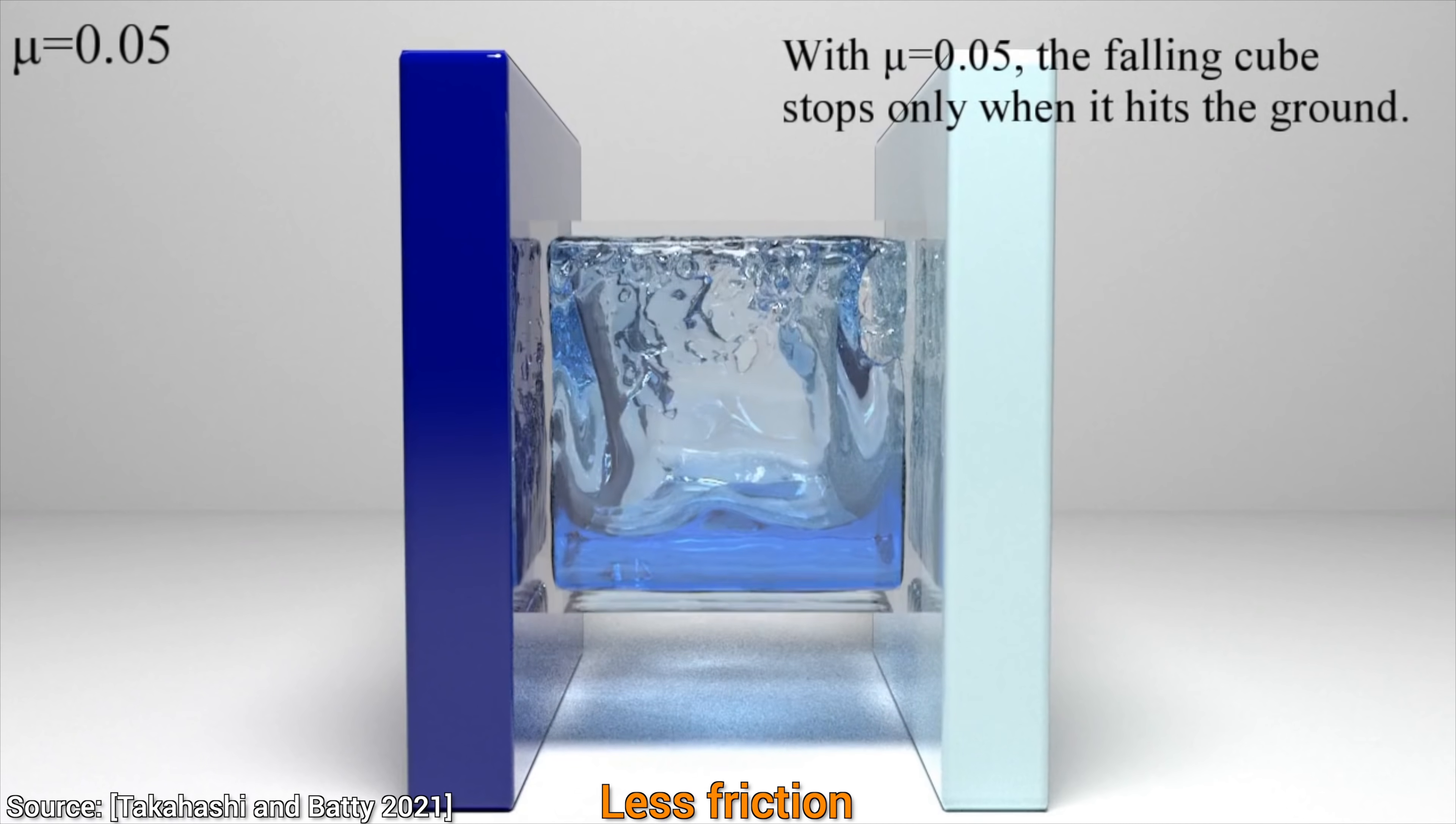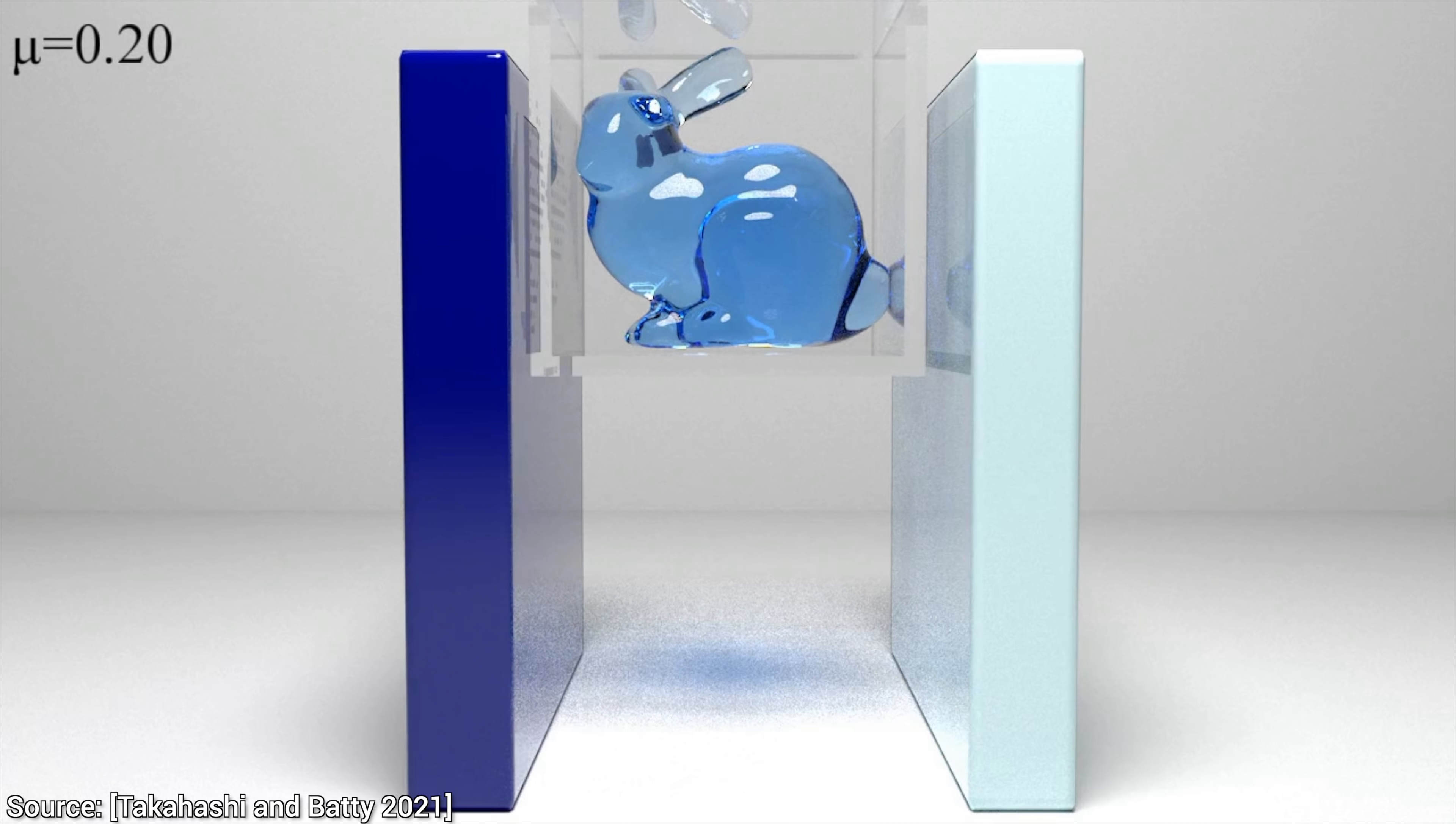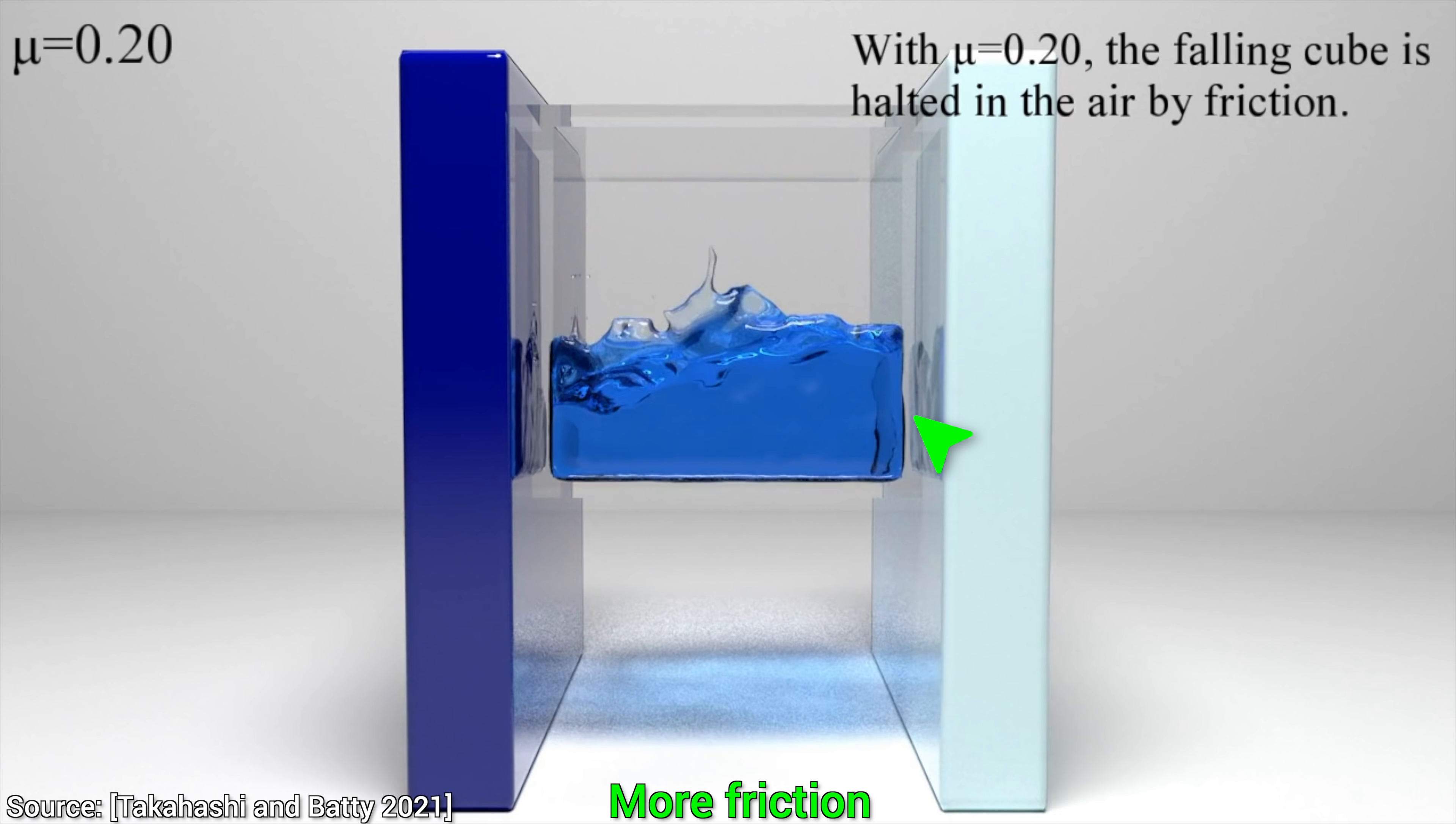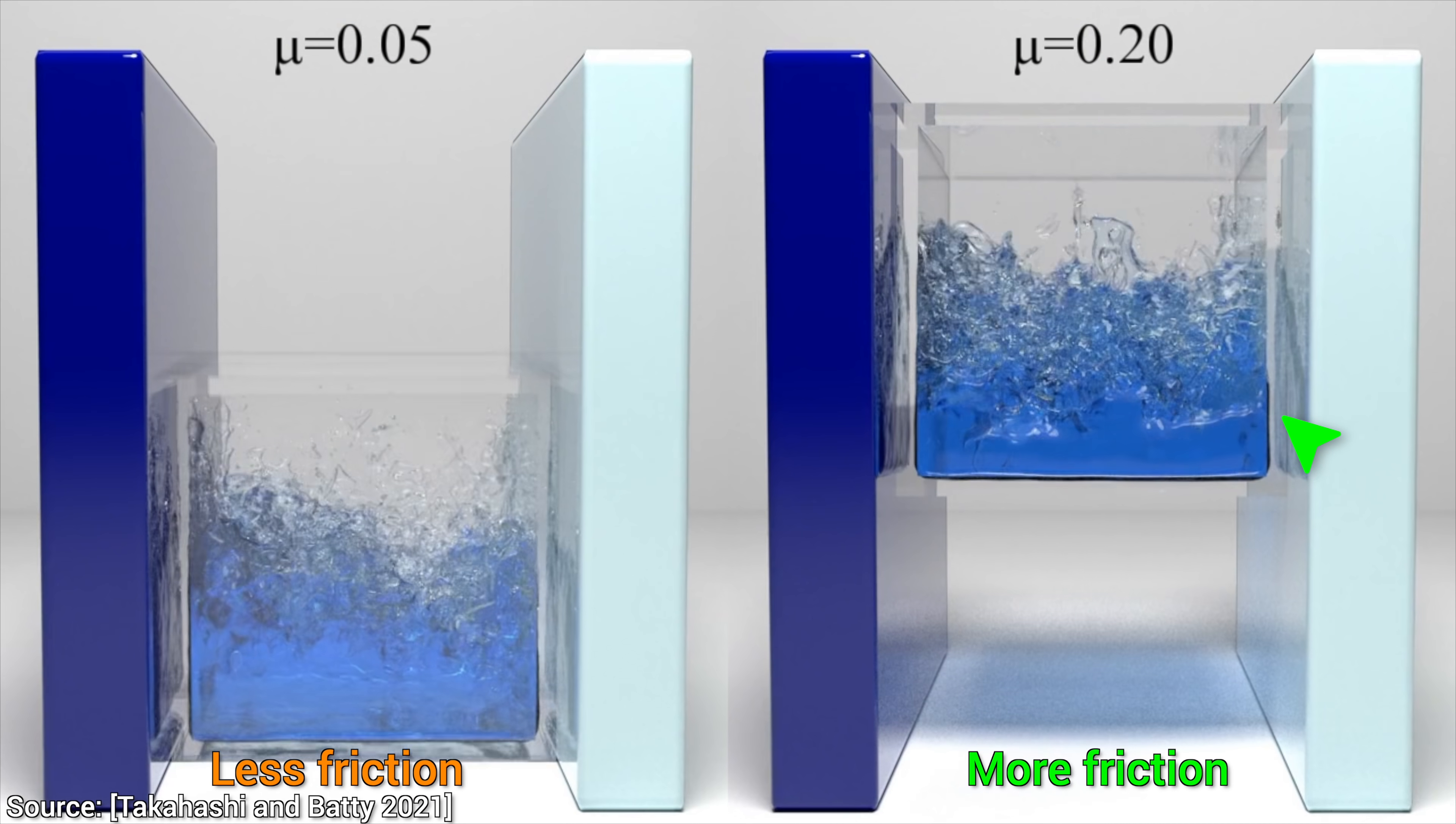For instance, we can make a world in which there is just a tiny bit of friction to slow down the fall. Or, we can create a world with a ton more friction, and now, we have so much friction going on, that the weight of the liquid cannot overcome anymore, and thus, the cube is quickly brought to rest between the walls.